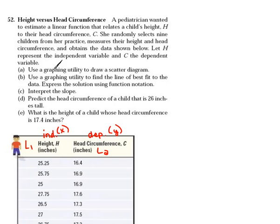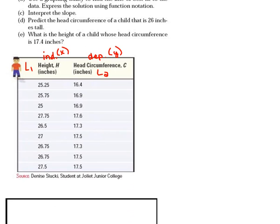Now part a says use a graphing utility to draw a scatter diagram. Okay let me show you the data points here. So if you need to you can pause this so that you can write each one of these down. Be very careful when you do that. Make sure that you copy everything exactly as it is. If you even have a decimal point off then it will skew your data completely.